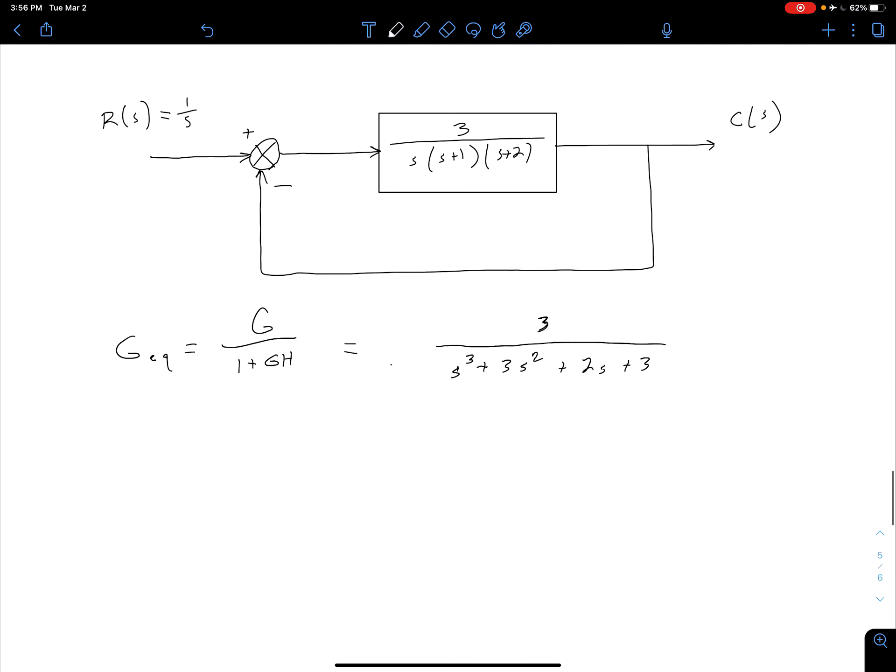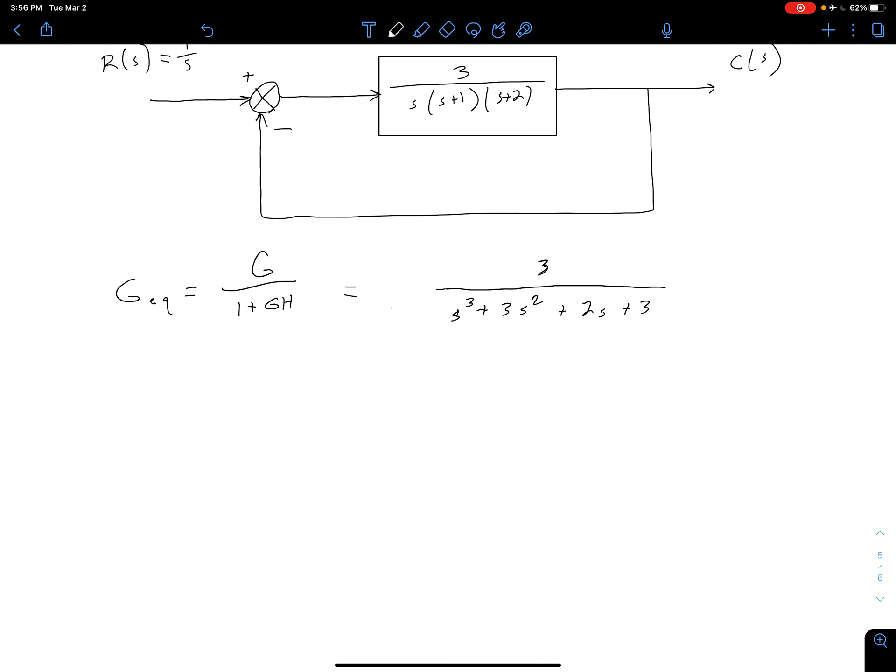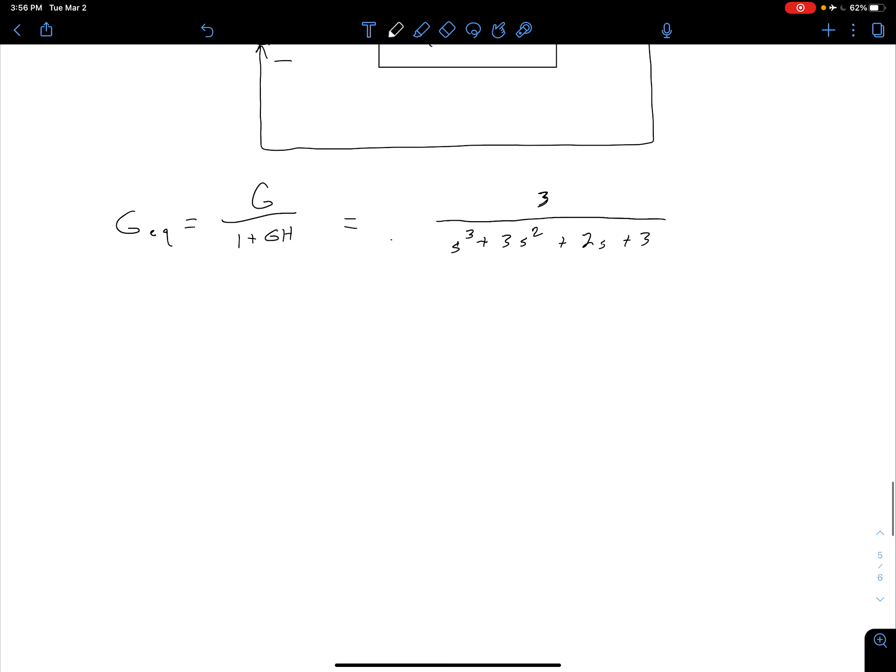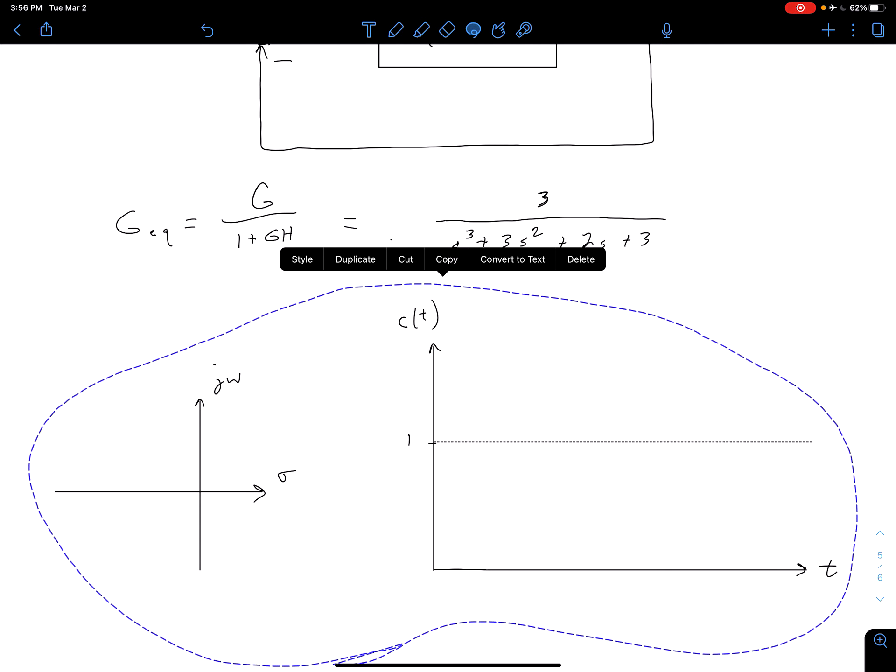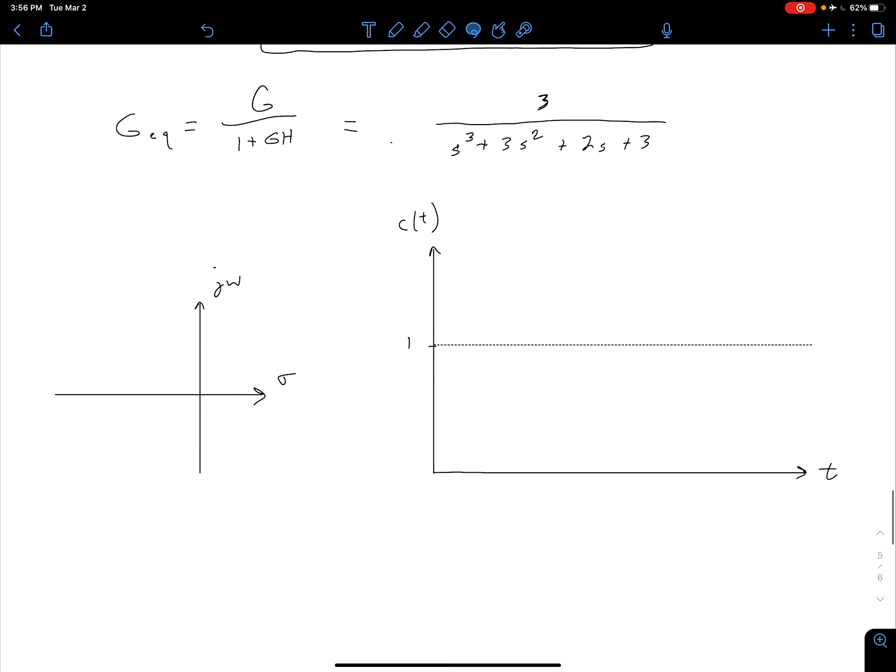And so what we could do at this point is we could figure out the poles of this transfer function. We've talked about ways to do that in MATLAB, you might have other ways to do that in a calculator or you might like doing it by hand. But if we were to find that we would see that we have of course three poles. We expect three poles because this is a third order system.